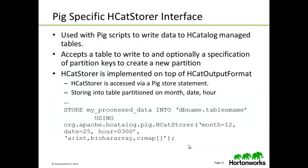H-Catalog has a Pig-specific HCatStore interface. It is used with Pig scripts to write data to H-Catalog managed tables. It accepts a table to write to and optionally a specification of partition keys to create a new partition. HCatStore is implemented on top of HCatOutputFormat. HCatStore is accessed via a Pig Store statement. Storing into a table partitioned on month, date, and hour would look similar to the command shown below.